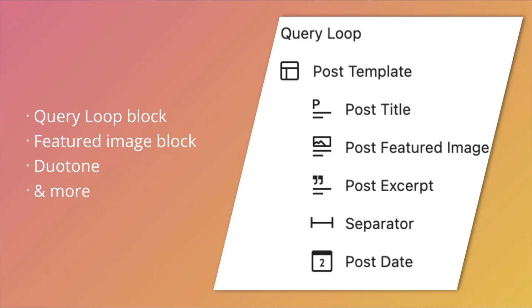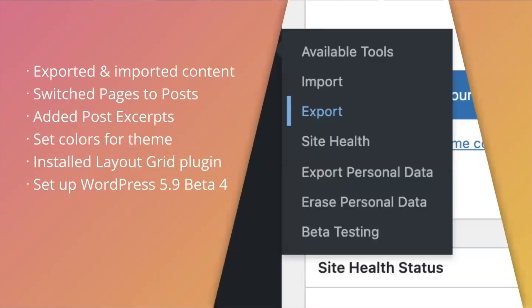So with that in mind, let me quickly set the stage, both in terms of the steps I took before this video and in terms of my current setup. Before I started this video, I exported and imported content from a current site, switched the pages to posts so I could more easily mess around with post excerpts, added in post excerpts for everything, set colors for the theme, installed the Layout Grid plugin which was in use on my previous site, and set up WordPress 5.9 Beta 4 so I could have access to some new and improved features.